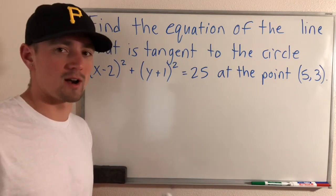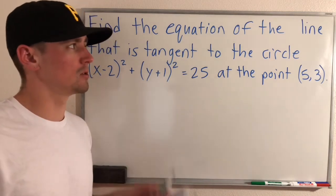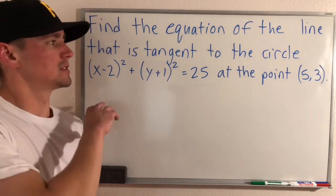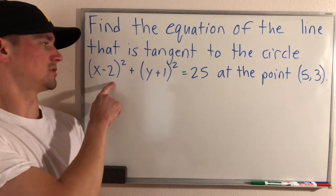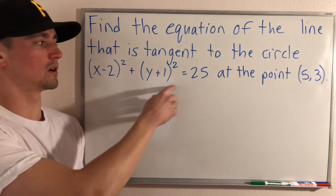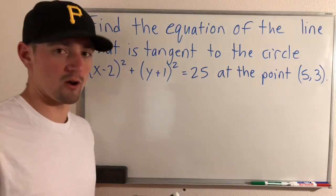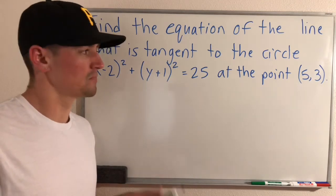So what we're going to be doing is finding the equation of a tangent line that is tangent to the circle (x-2)² + (y+1)² = 25 at the point (5, 3) and we're gonna do it without ever having to take a derivative. So I'll show you how to do that.